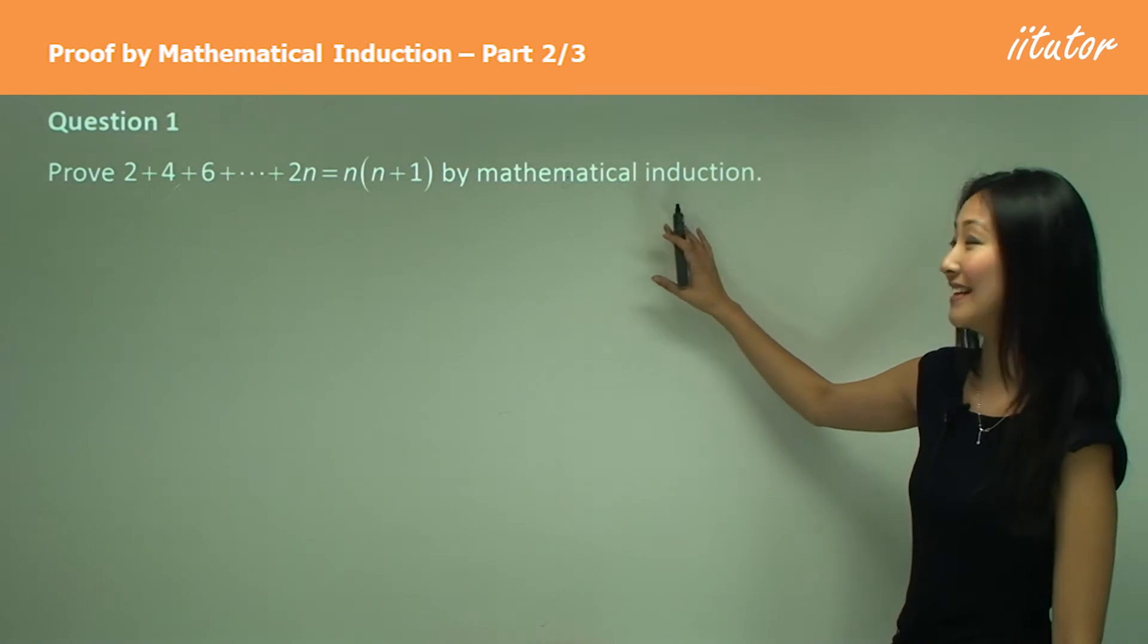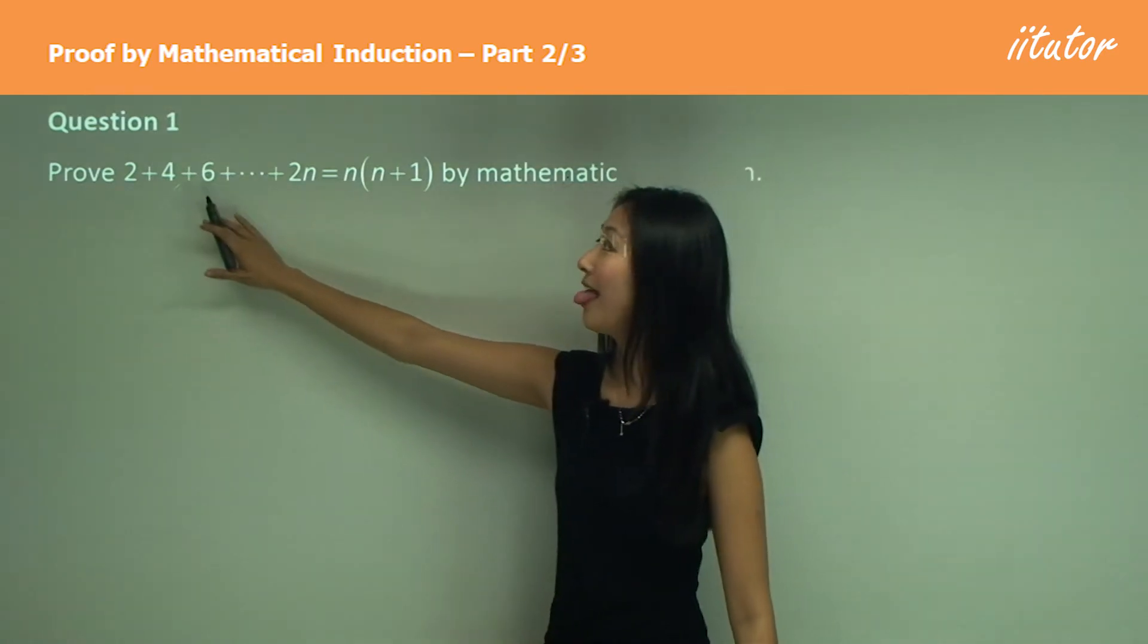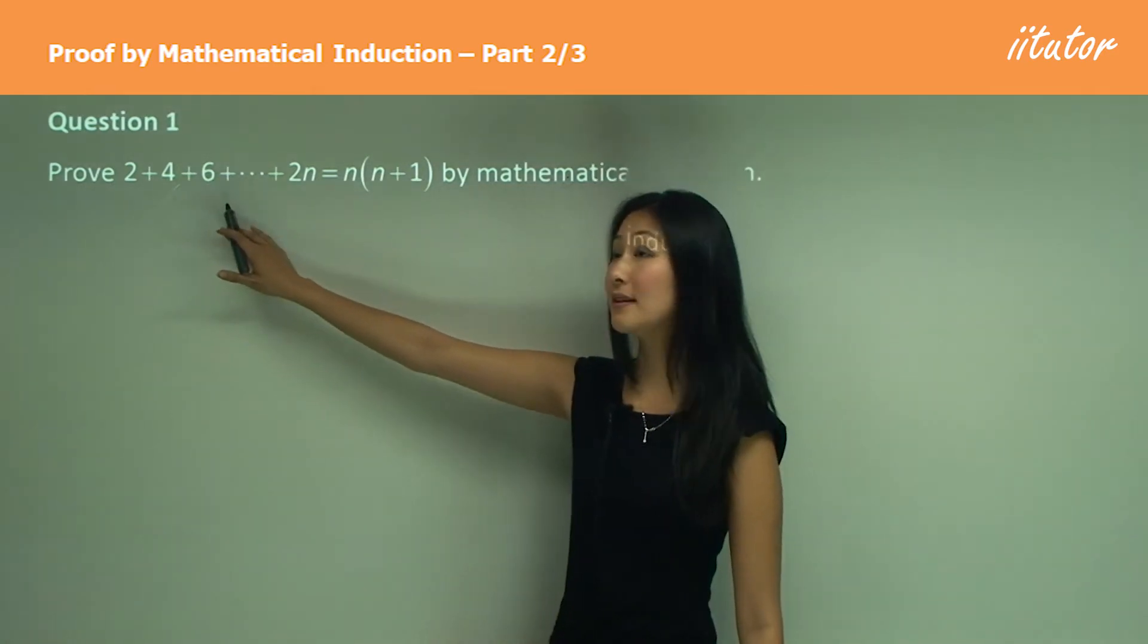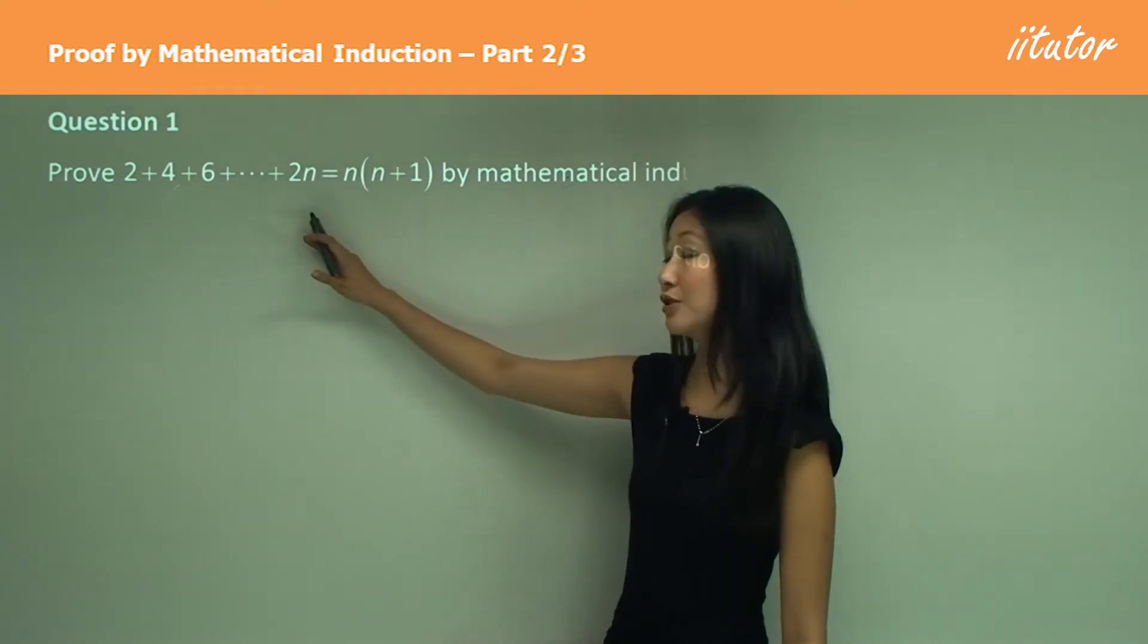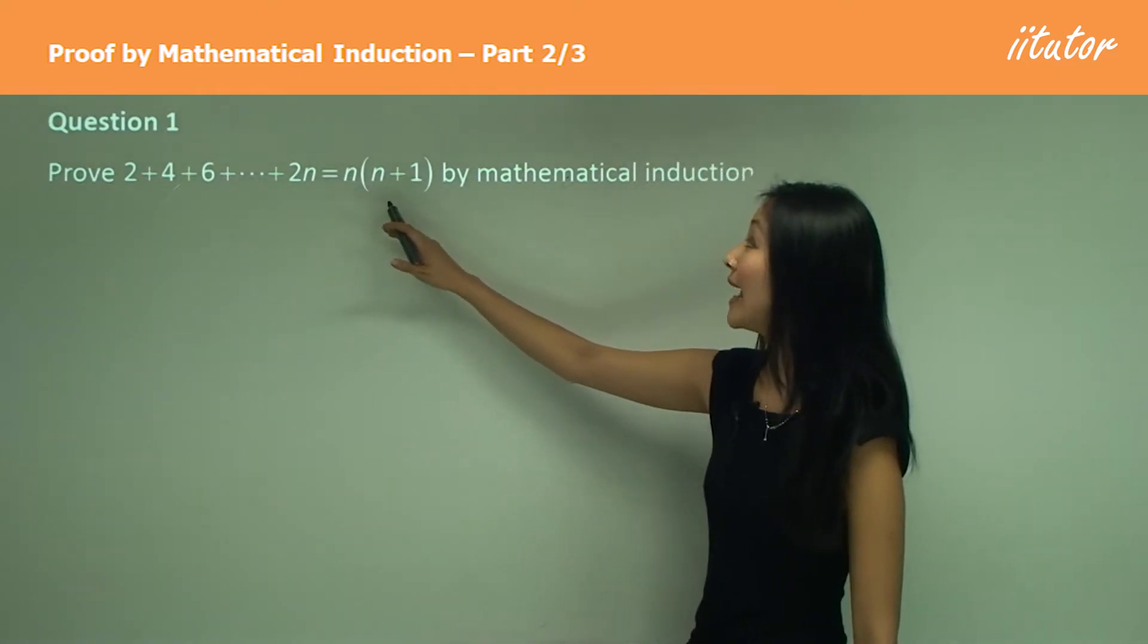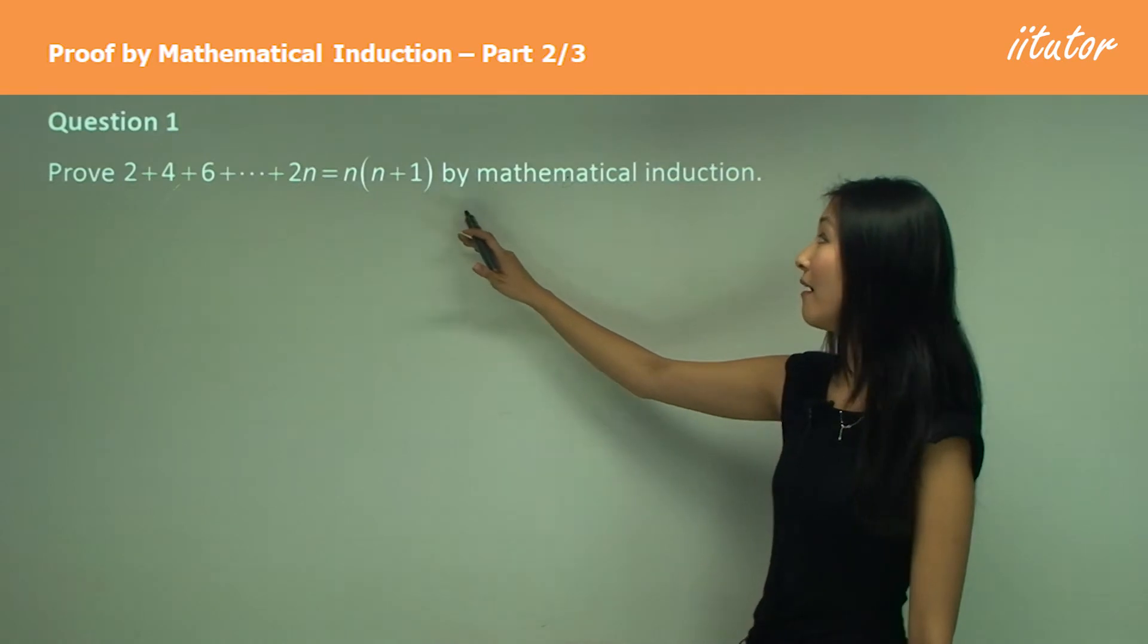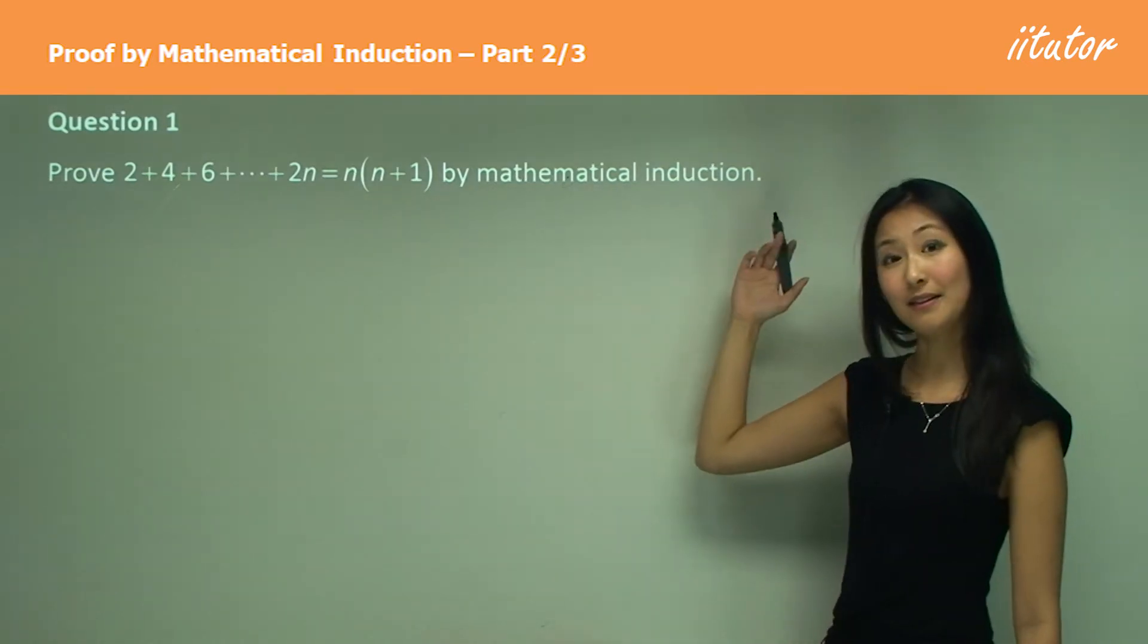So in question one we have to prove that 2 plus 4 plus 6 and so on till 2n equals n times n plus 1 by the process of mathematical induction.